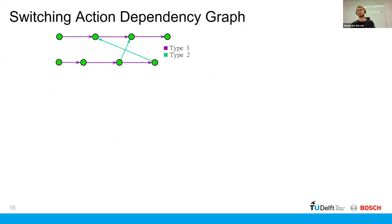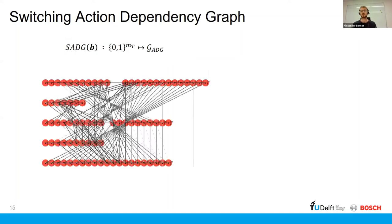So this concept of switching, we formalize this so-called switching action dependency graph. And the question now is the previous examples were quite trivial, but now what if you have an SADG which looks like this, which dependencies do we switch?